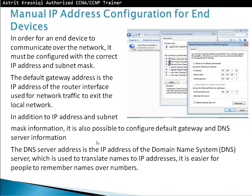We can configure IP addresses on end devices manually or dynamically. We can use DHCP to dynamically configure IP addresses, or we can statically configure them. In order for an end device to communicate over the network, it must be configured with the correct IP address and subnet mask. The default gateway address is the IP address of the router interface used for network traffic to exit the local network. In addition to IP address and subnet mask, it is also possible to configure the default gateway and DNS server. DNS translates names to IP addresses — so when you type cisco.com, DNS gives you the corresponding IP address. It's easier for people to remember names than numbers.